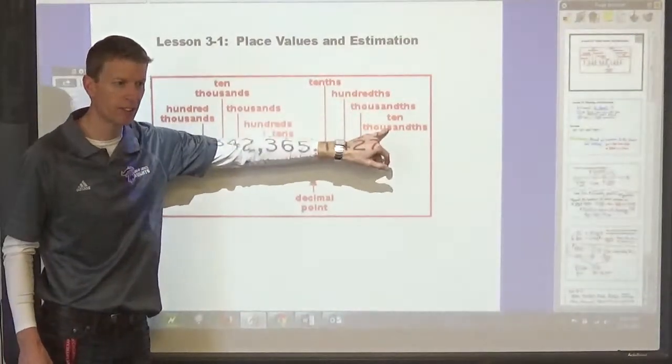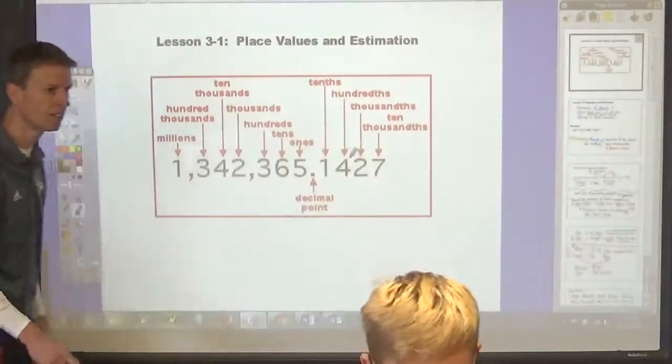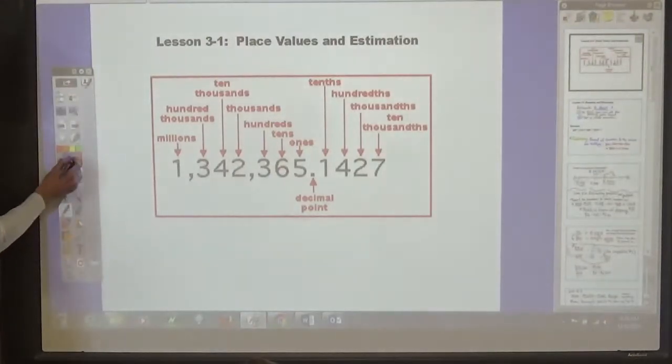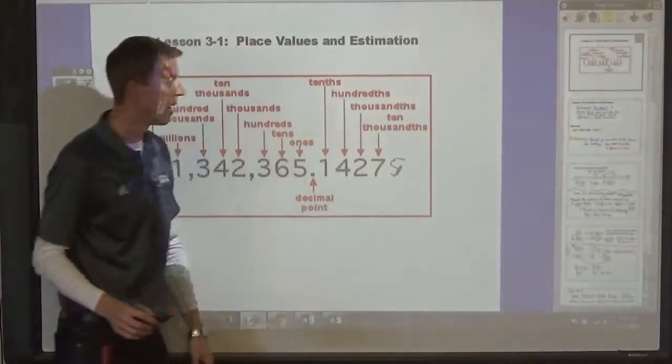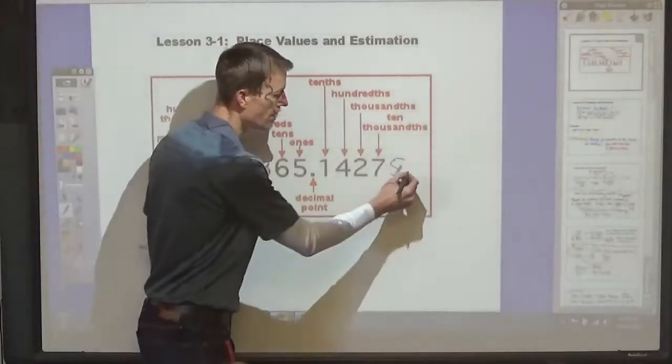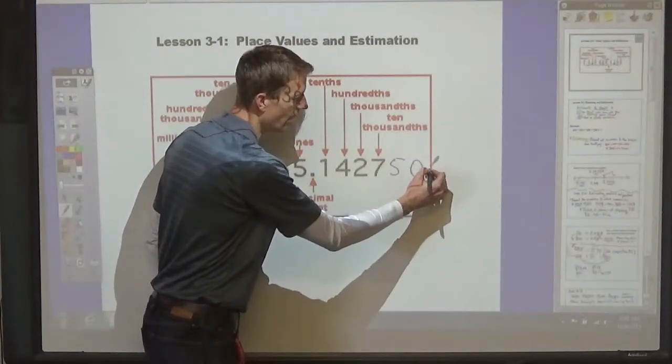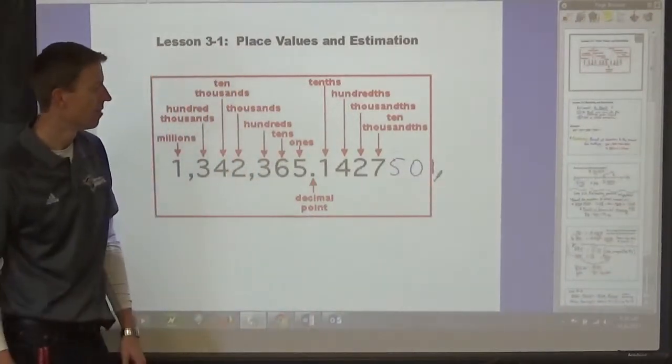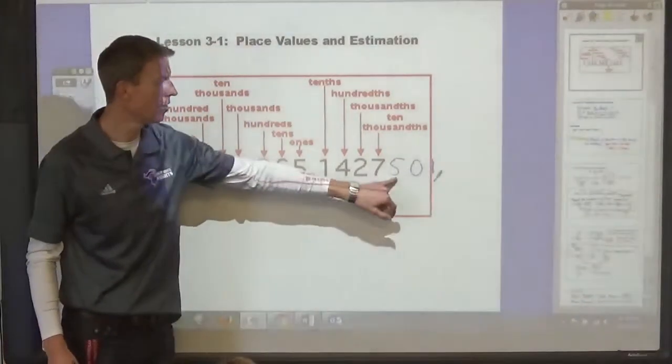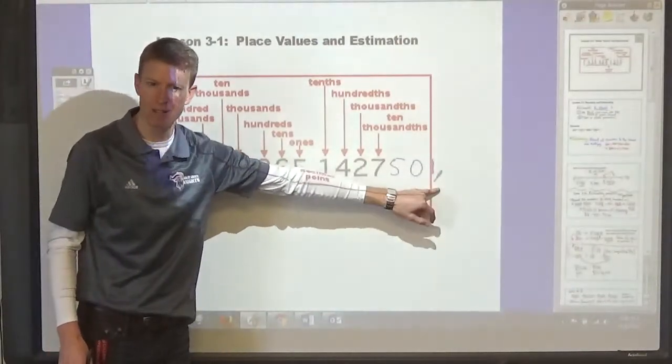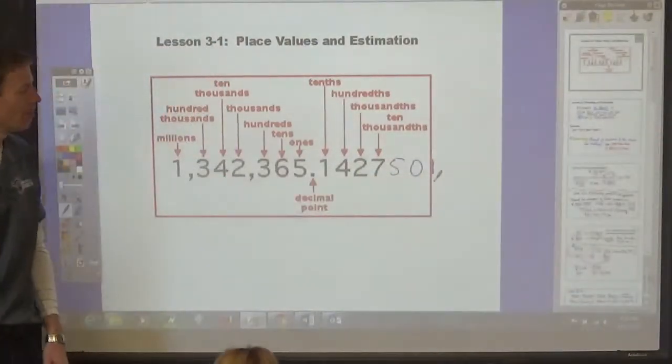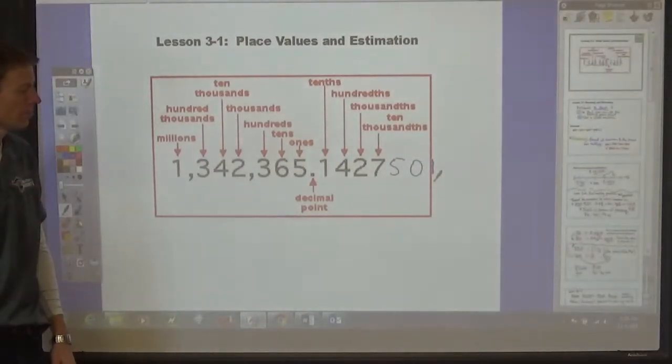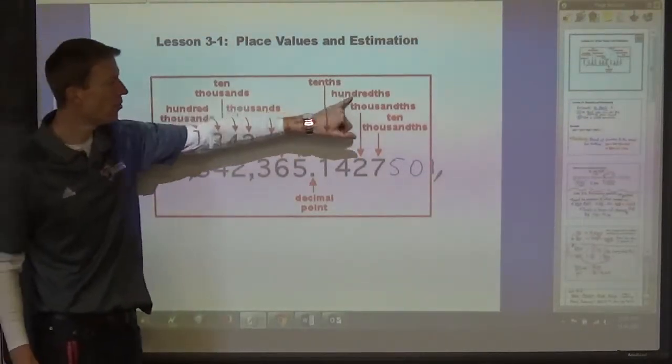You need to have those memorized. Tens, hundreds, thousands, ten thousands. What comes after ten thousands? Tens, hundreds, hundreds thousands, right? So, if this was a five, that would be five hundred thousandths. And if this was a zero and then a one, this would be a hundred thousandths, and then millions, and then ten millions, hundred millions. Oh, I'm sorry, yeah, ten millions, hundreds millions, billions, and so on.